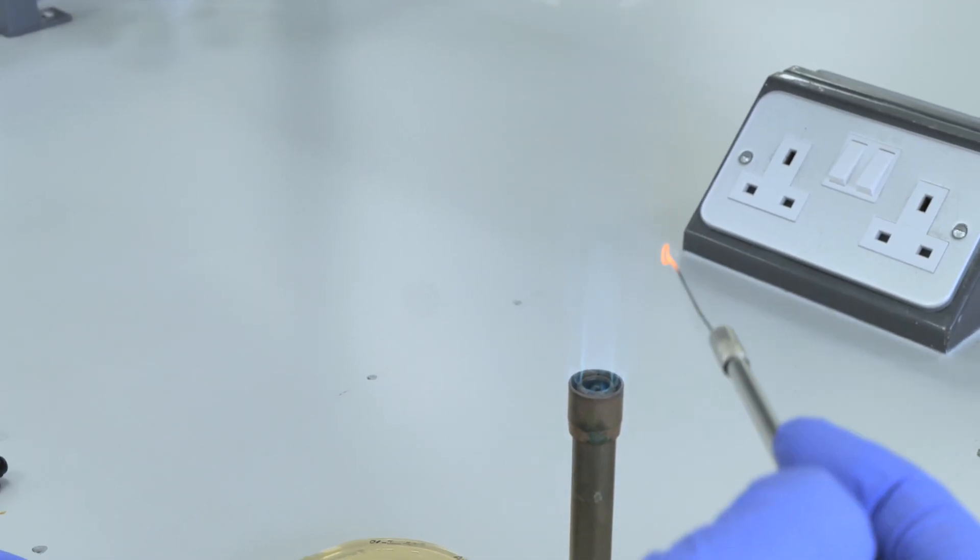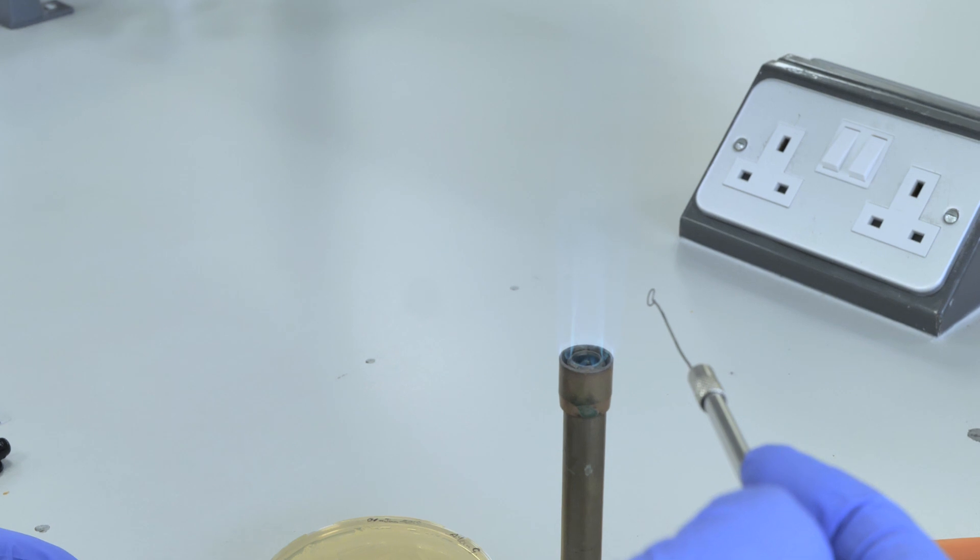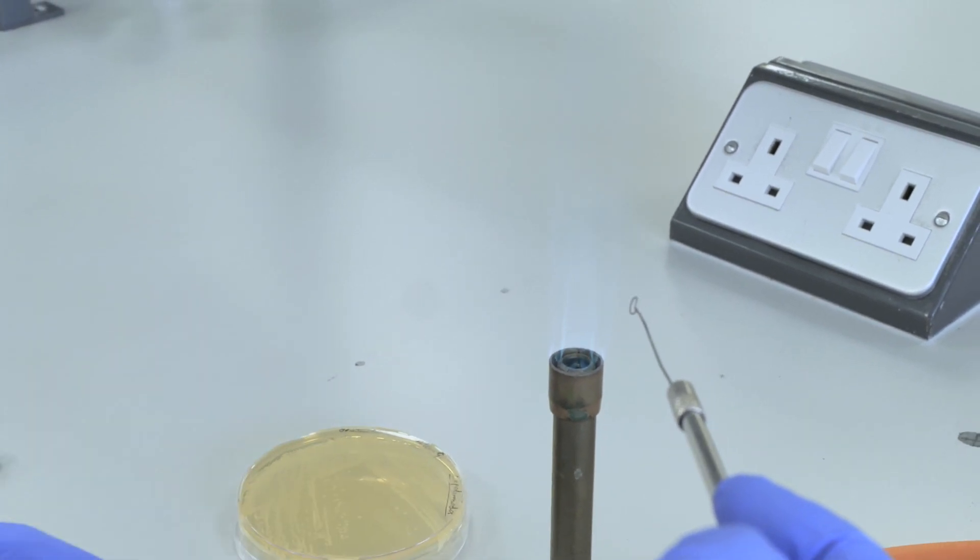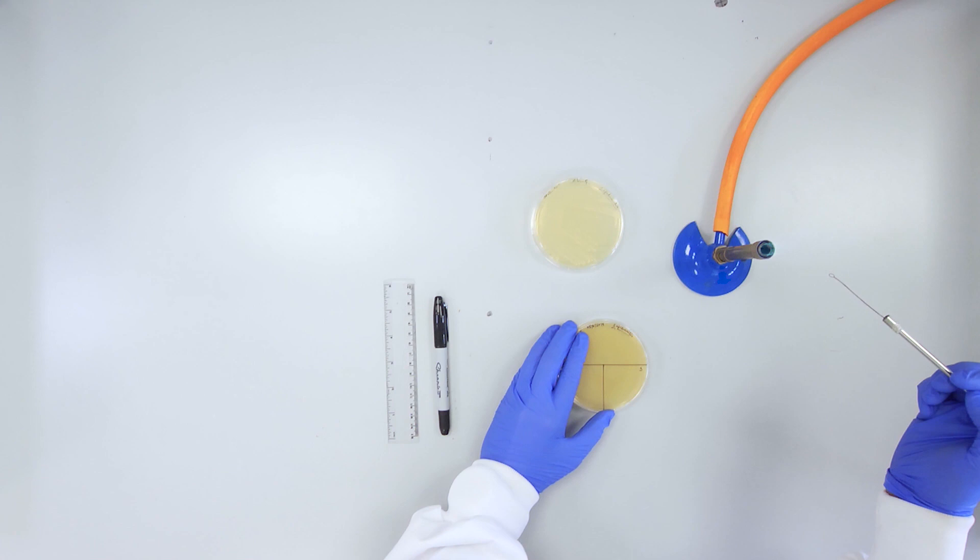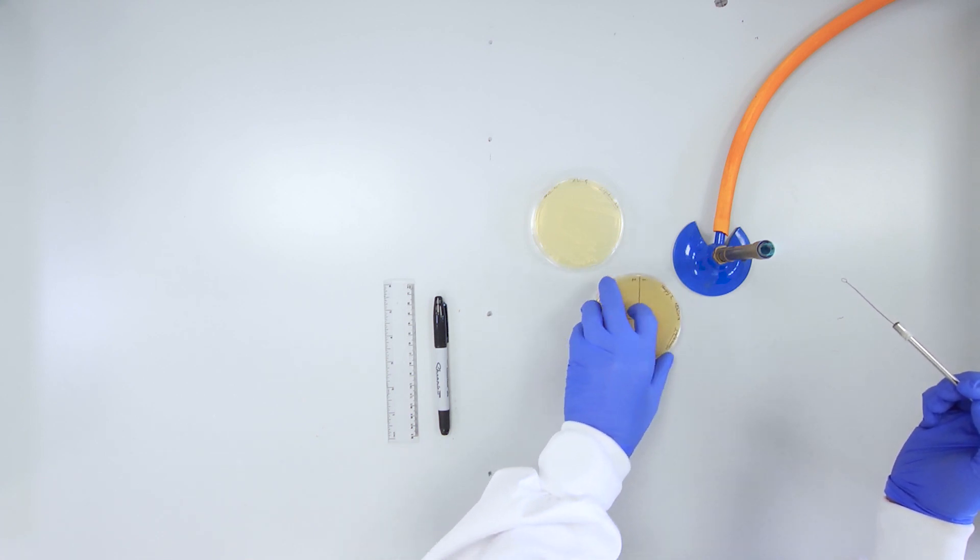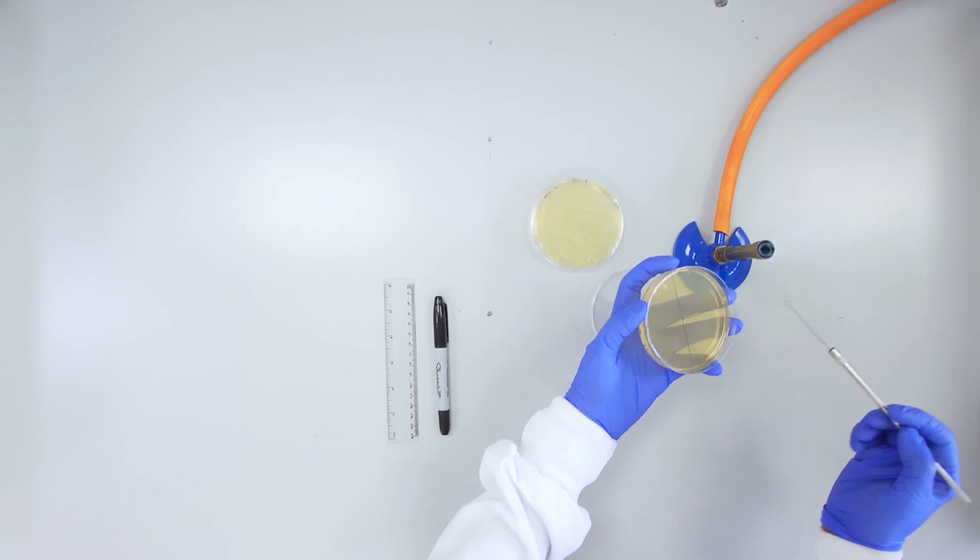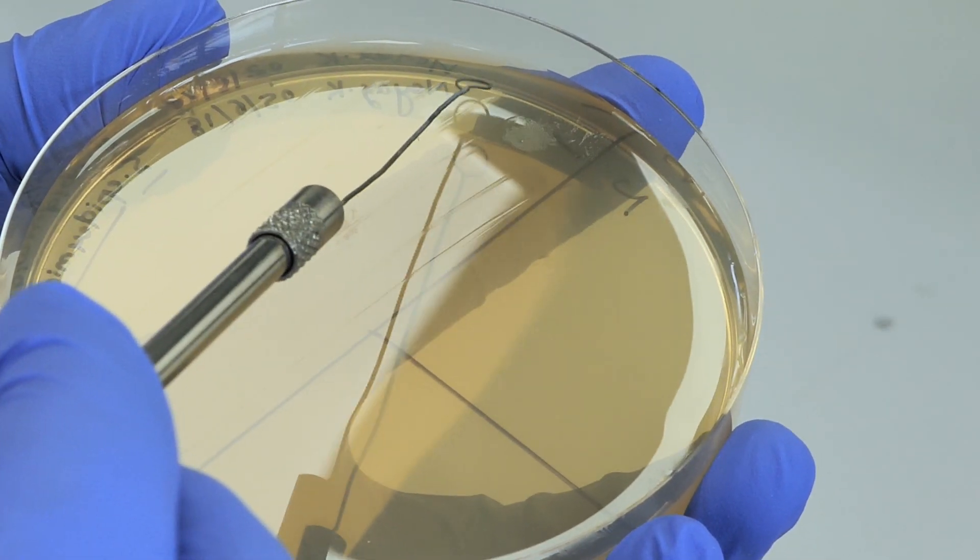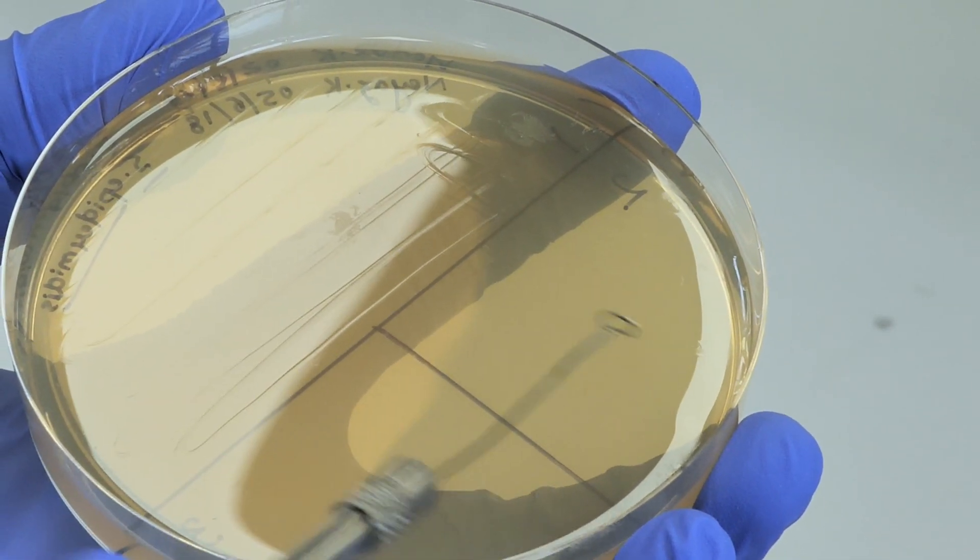Re-sterilize your loop and allow to cool for 20 seconds. Rotate your TSA plate 90 degrees to the right. Starting in section 1, recharge your loop by streaking from section 1 into section 2.